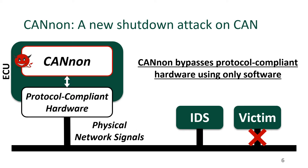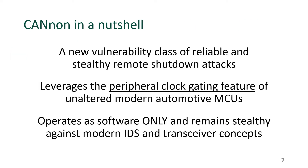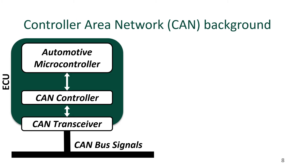In this talk, we introduce a new class of shutdown attack that uses only compromised software to mimic and disrupt physical network signals while bypassing the protocol compliance of the CAN hardware. We present CANON, a reliable and stealthy remote shutdown attack that leverages the peripheral clock gating feature of unaltered automotive microcontrollers. This attack operates using only an ECU's compromised software, and it can remain stealthy against both a monitoring IDS and proposed secure CAN transceivers.